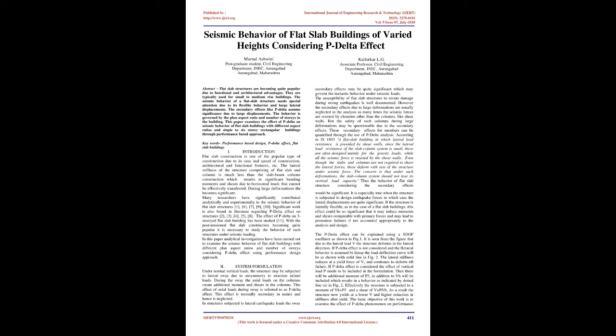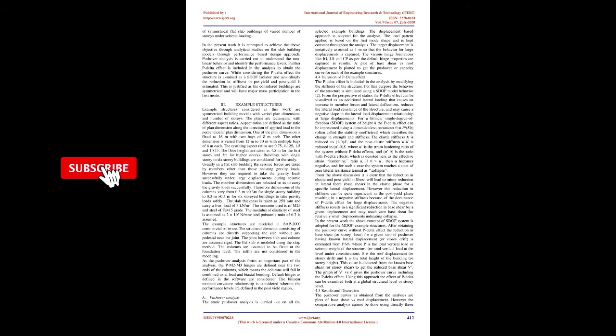The susceptibility of flat slab structures to severe damage during strong earthquakes is well documented. However, the secondary effects due to large deformations are usually neglected in the analysis, as many times the seismic forces are resisted by elements other than the columns, like shear walls. But the safety of such columns during large deformations may be questionable due to the secondary effects. These secondary effects for members can be quantified through P-Delta analysis. According to IS1893, in a flat slab building where lateral load resistance is provided by shear walls, the slabs and columns are often designed mainly for gravity loads while all seismic force is resisted by the shear walls. Even though they are not required to share lateral forces, these deform with the rest of the structure under seismic force. The concern is that the slab-column system should not lose its vertical load capacity under such deformations.